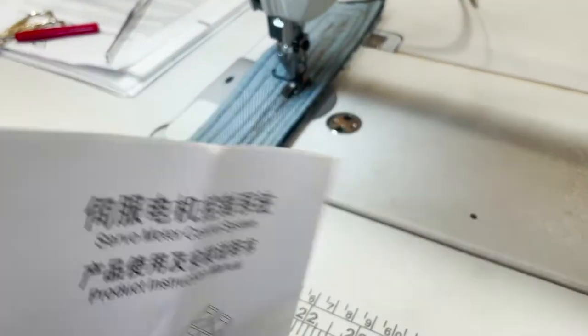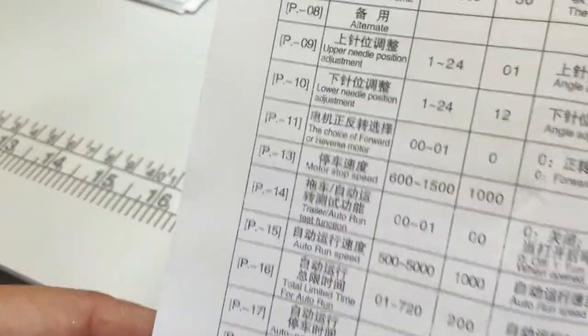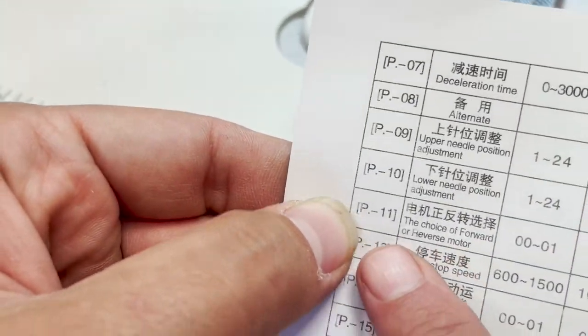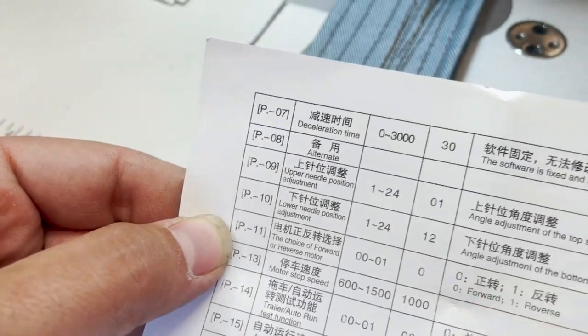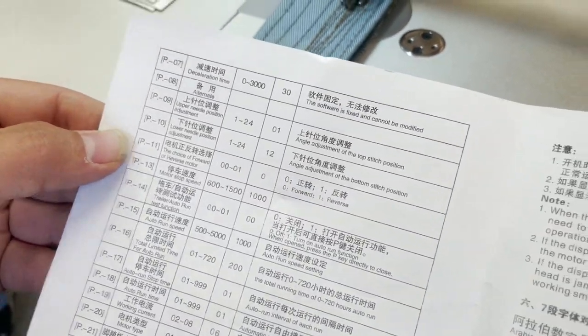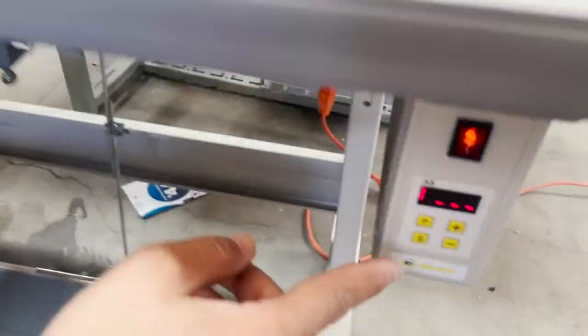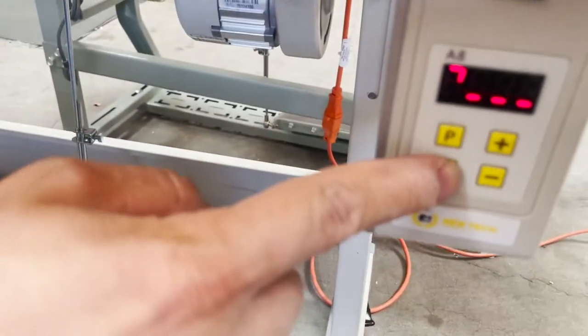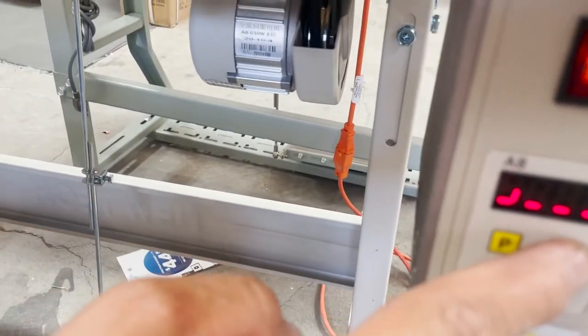If you look at the brochure that came with it, it tells you that you have to go to P11 to change the direction. Now if you go to the motor and you go up and down, it would not go to P11.